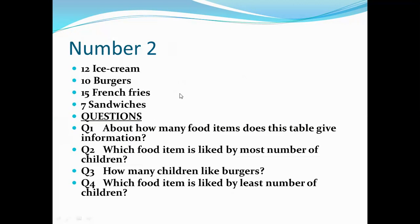The second sum is 12 ice creams, 10 burgers, 8 steamed french fries, and 7 sandwiches. This is about how many food items the table gives us information on, which food item is liked by the most number of children, how many children like burgers, and which food item is liked by the least number of children. You will make a table with the name of the food item, the tally mark, and the total number of children, and write answers as A1, A2, A3, and A4.